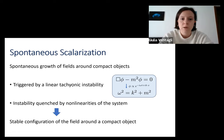At a linear level it is triggered by tachyonic instability. Here we have a Klein-Gordon scalar field equation, and if the scalar field acquires a negative effective mass squared, then the scalar field exponentially grows. This growth can be quenched if one takes into consideration the nonlinearities of the system. If this happens, then we are left with a stable configuration of the scalar field around the neutron stars or the black holes.